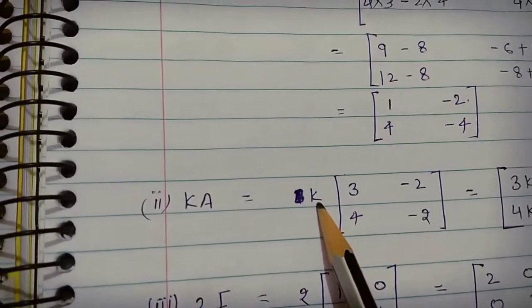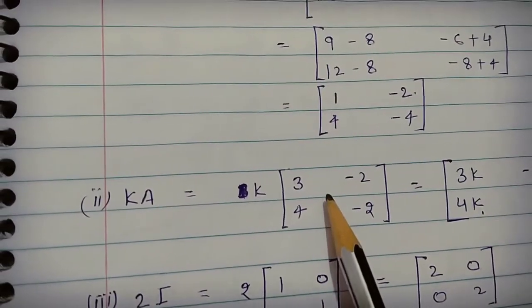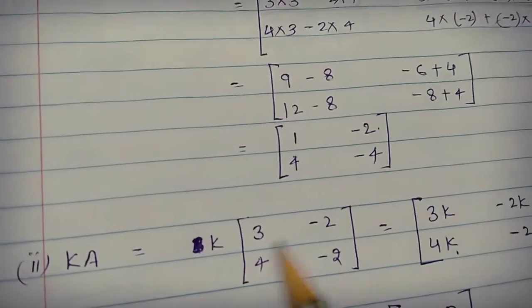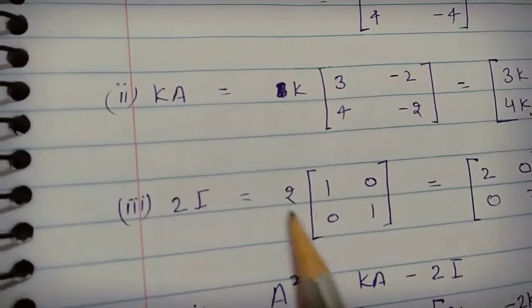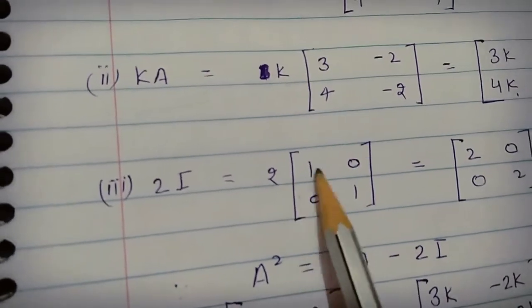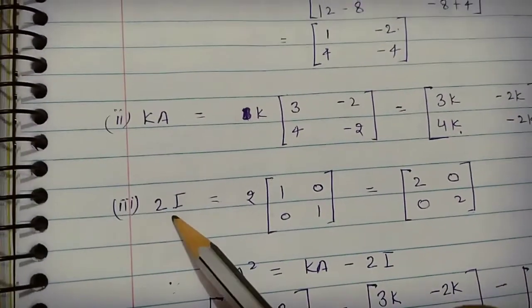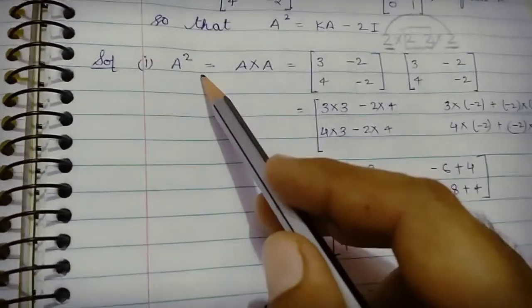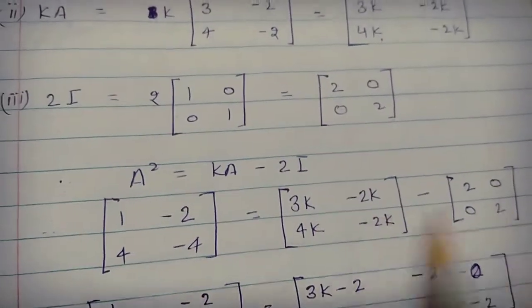Next, we evaluate the second term: k times A. Since k is a scalar, we multiply k by each element of A: k times 3 equals 3k, k times (−2) equals −2k, k times 4 equals 4k, and k times (−2) equals −2k. For the third term, 2 times the identity matrix I gives: 2 times 1 equals 2, 2 times 0 equals 0, 2 times 0 equals 0, 2 times 1 equals 2.